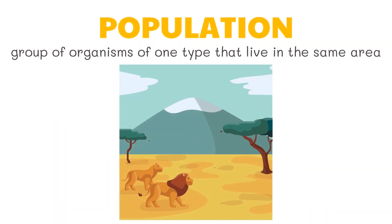A population is a group of organisms of one type that live in the same area. For example, a pride of lions in Kenya, Africa is a population.